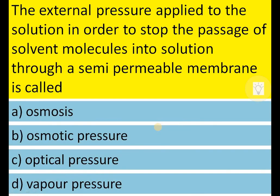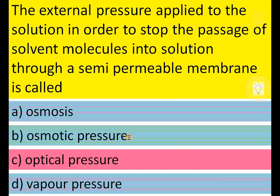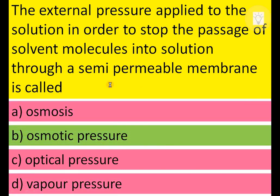The external pressure applied to the solution in order to stop the passage of solvent molecules through a semi-permeable membrane is called osmosis, osmotic pressure, optical pressure, or vapor pressure. Optical pressure is eliminated first. The answer is osmotic pressure.